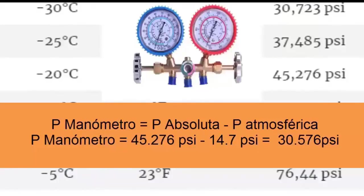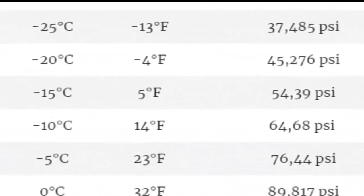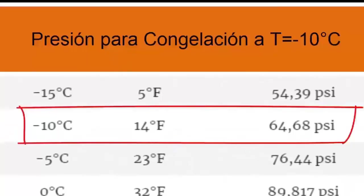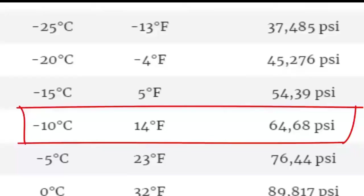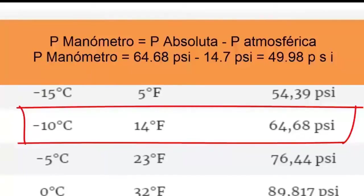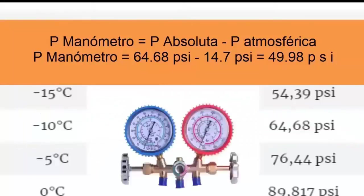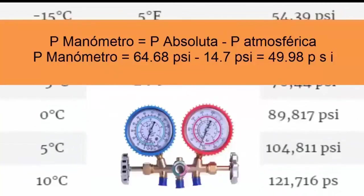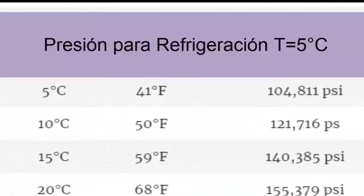To find the low or evaporator pressure that the gauge would show, we subtract the atmospheric pressure from the table value. In this way: 45.276 PSI minus 14.7 PSI gives a gauge pressure of 30.376 PSI. For refrigerators working with an evaporator temperature of minus 10 degrees Celsius (about 14 degrees Fahrenheit), the absolute pressure is 64.68 PSI; subtracting 14.7 PSI gives a gauge pressure of 49.98 PSI.